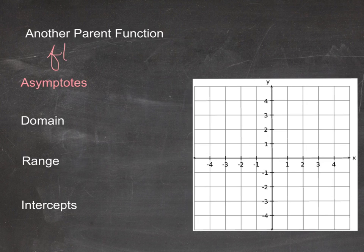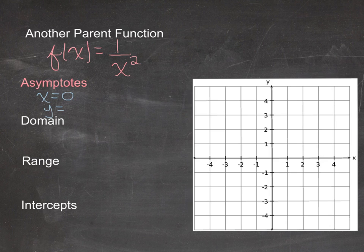The second parent function is f(x) = 1/x². Again, x = 0 is a vertical asymptote because it would make the denominator zero, and y = 0 is a horizontal asymptote because the numerator is 1 and can never equal zero. When x = 1, f(1) = 1 — same shape as before in the first quadrant. When x = −1, squaring makes it positive, so the curve comes up into the second quadrant as well.